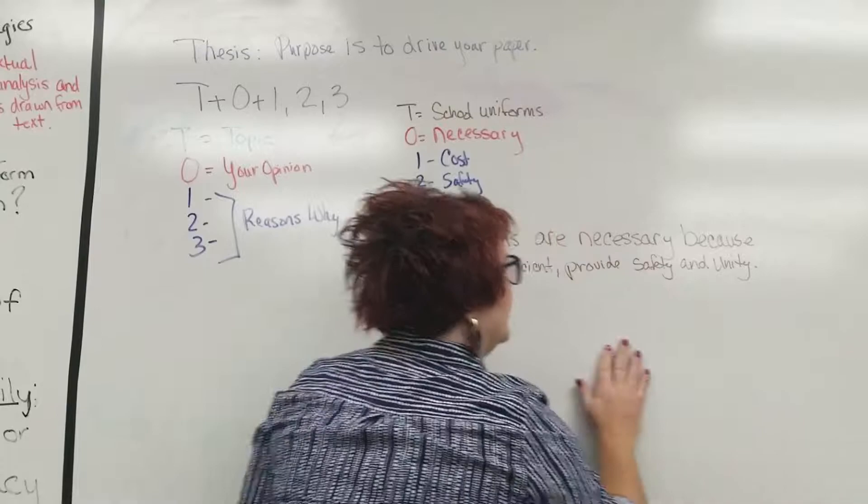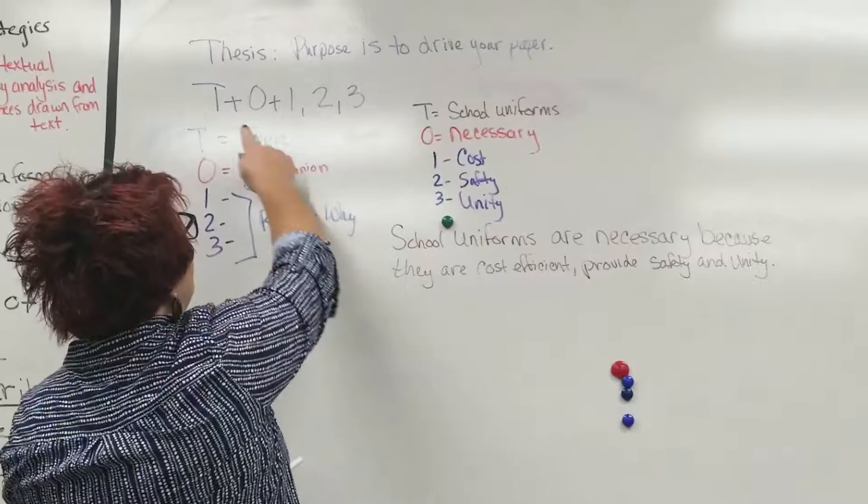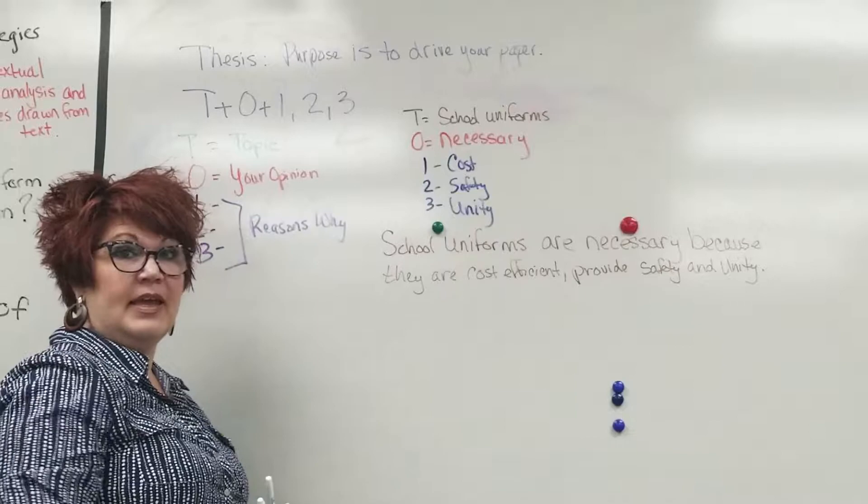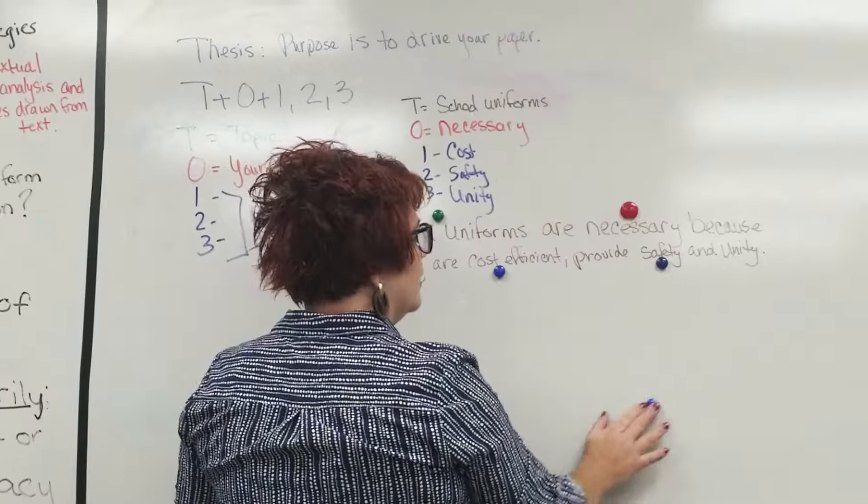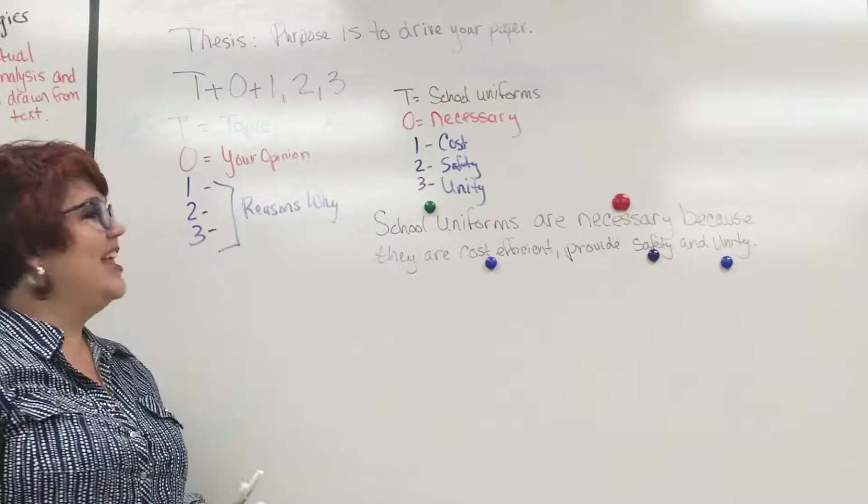That's all I'm going to do. I'm going to start off with my topic and say, school uniforms are necessary because they are cost-efficient, provide safety, and unity. One statement. A lot of big ideas there in one statement. Let me show you where your T is. I'm going to use my handy dandy little dots here. My T is school uniforms. There's my topic. Following my formula, T. My opinion is I'm saying that they're necessary. Again, you can argue this any way you wish. It's just giving your ideas and persuading your audience. Now I'm moving forward to why are they necessary or how. They're cost-efficient, they provide safety, and they provide unity. T, O, one, two, three. Easy, right?